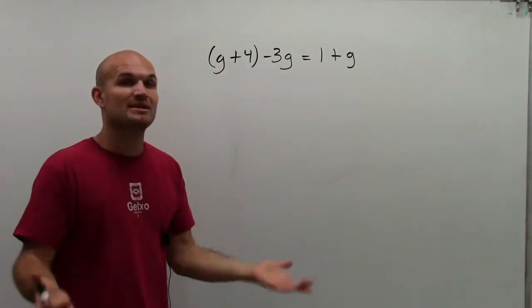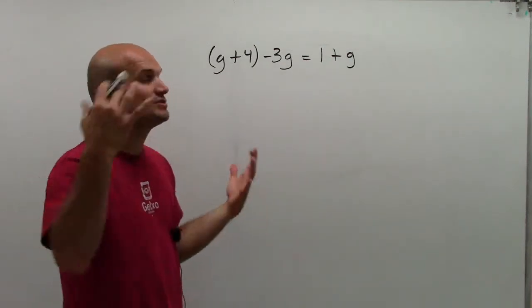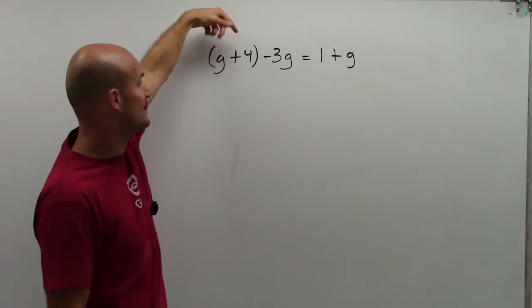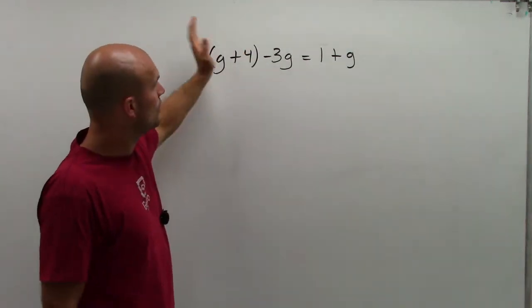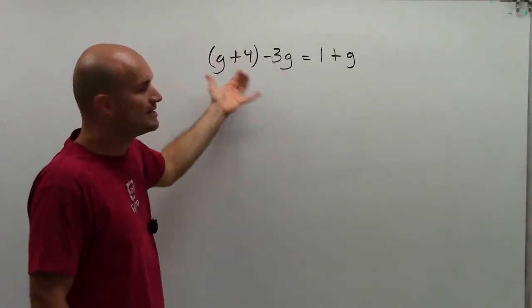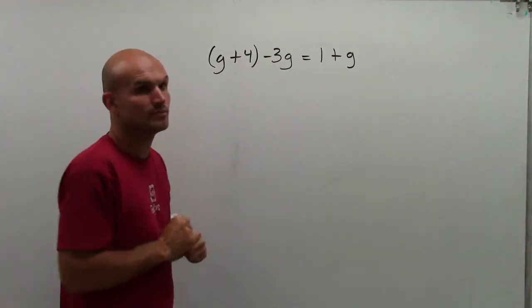Before I even get them on the same side, I want to use PEMDAS, order of operations, to simplify both sides. I look inside the parentheses. There's nothing I can do to simplify, since these are not like terms. I do not have any exponents. There's really nothing else that's going on. So what I can do is undo this parentheses.